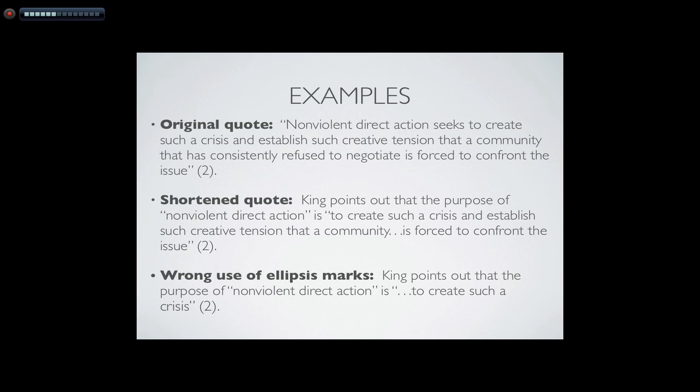In this situation, maybe the author had already talked about how the community has refused to negotiate and doesn't want to repeat that information. So you can use the ellipsis marks when leaving out information within the quote. You don't want to use it — as you'll see in the wrong example at the bottom — at the beginning or end of a quote. For example: "King points out that the purpose of non-violent direct action is ... to create such a crisis" — that's incorrect. You only use ellipsis marks when leaving out information within the quote.